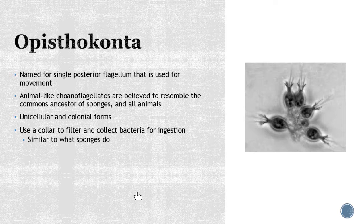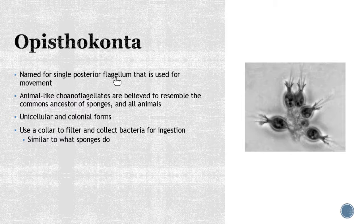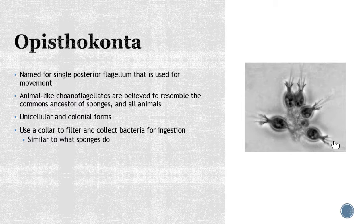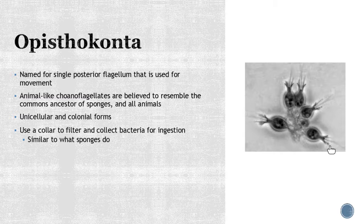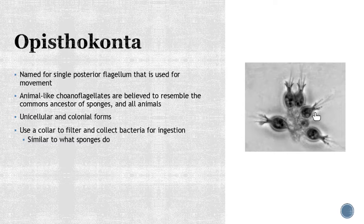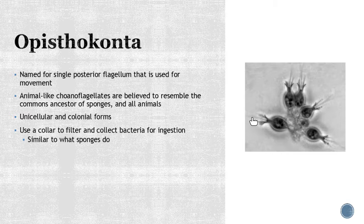Opisthokonta. These have the single posterior flagellum and they're going to use it for movement. This is one of the best images I could find to show you. Here's about five of them together. I don't know if they're munching on this food source, but they have that long collar. It's going to be very similar to what in the sponges happen. They are the common ancestor of sponges and pretty much all animals. You're going to see this collar cell appearance show up when we talk about the sponges, and they're going to use that as kind of like a filter to bring things into their body.